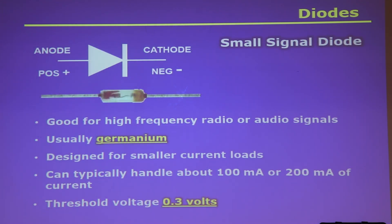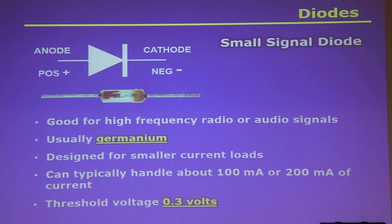Small signal diodes are little tiny ones, usually glass-looking. They're good for high-frequency radio signals and are usually made of germanium, not silicon. They're designed for much smaller current loads — for really small voltages like you'd receive off your antenna. A crystal radio could be made with one of those. They can typically handle about 100 to 200 milliamps. Their threshold voltage is lower — about three-tenths of a volt. They're great for RF signal detection but not for power supplies.